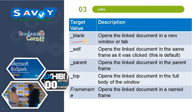Target attribute values for links: underscore blank opens the link document in a new window or tab. Underscore self opens the link document in the same frame as it was clicked. Underscore parent opens the link document in the parent frame. Underscore top opens the link document in the full body of the window. Fragment opens the link document in a named frame.